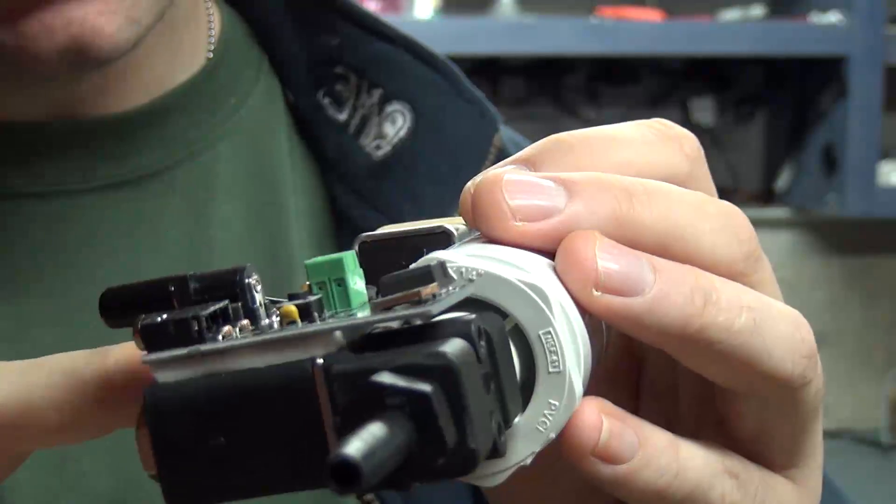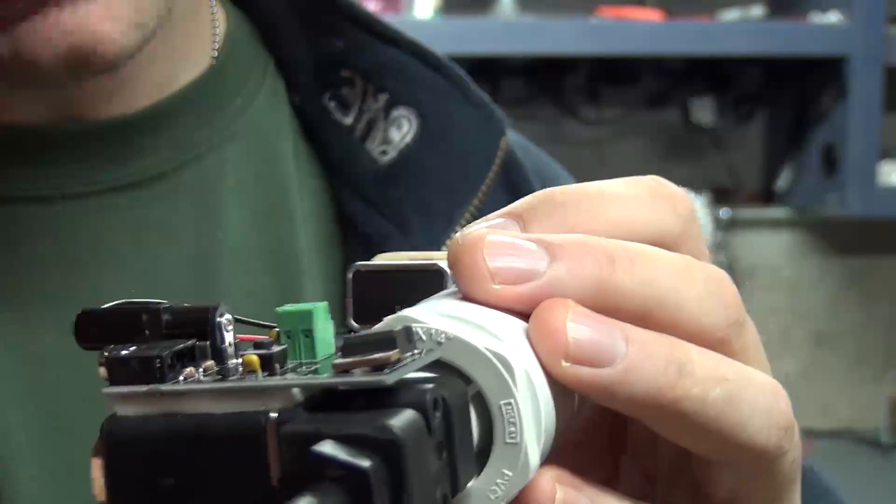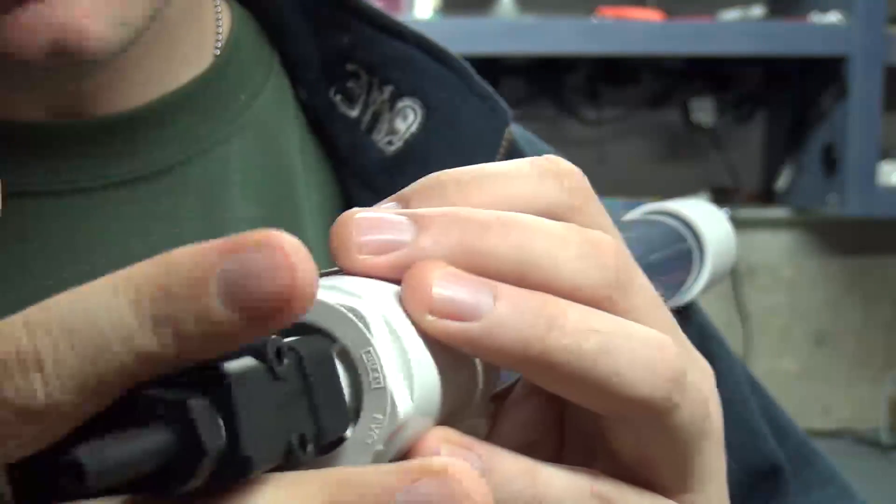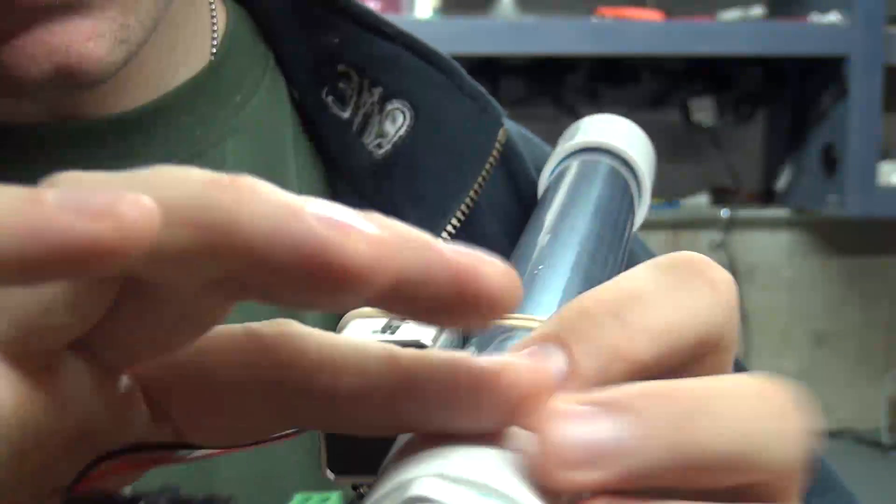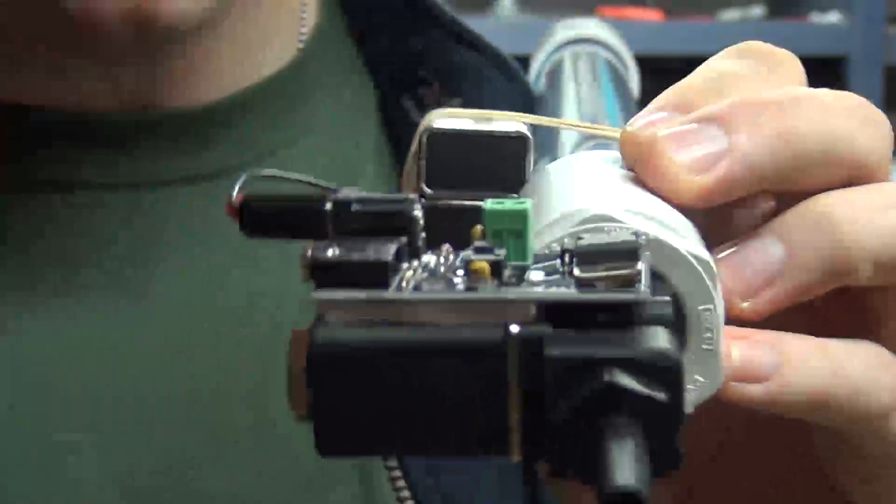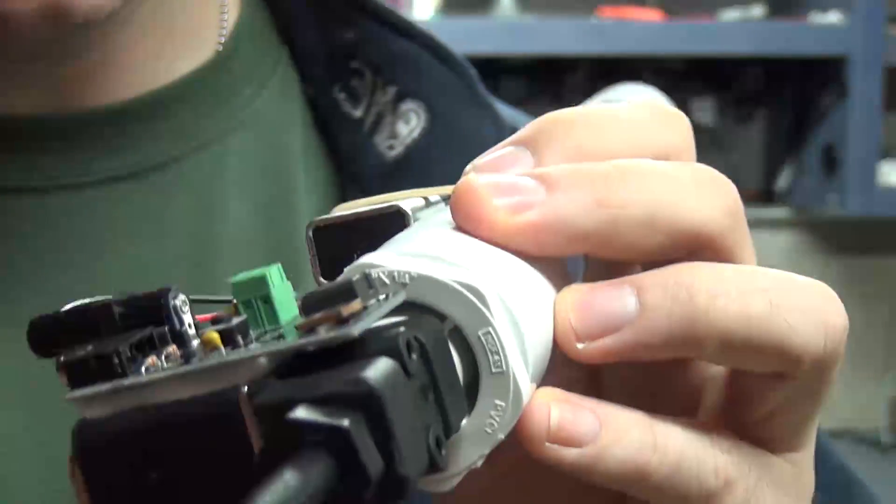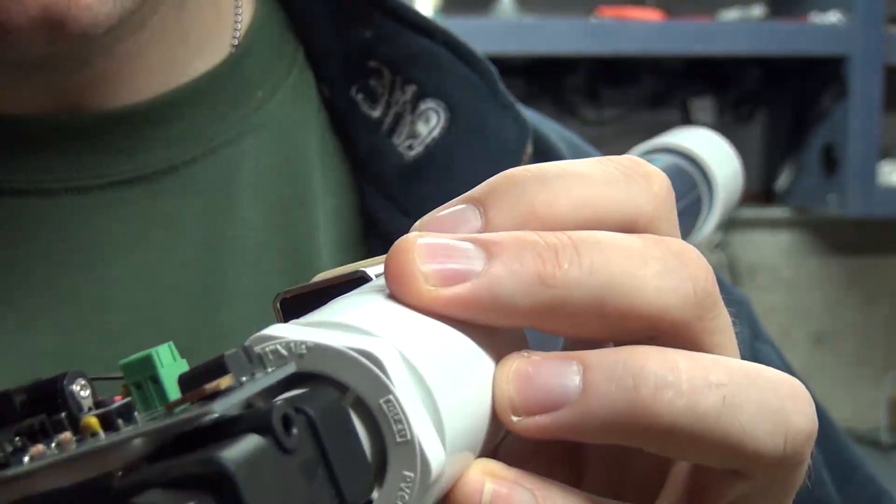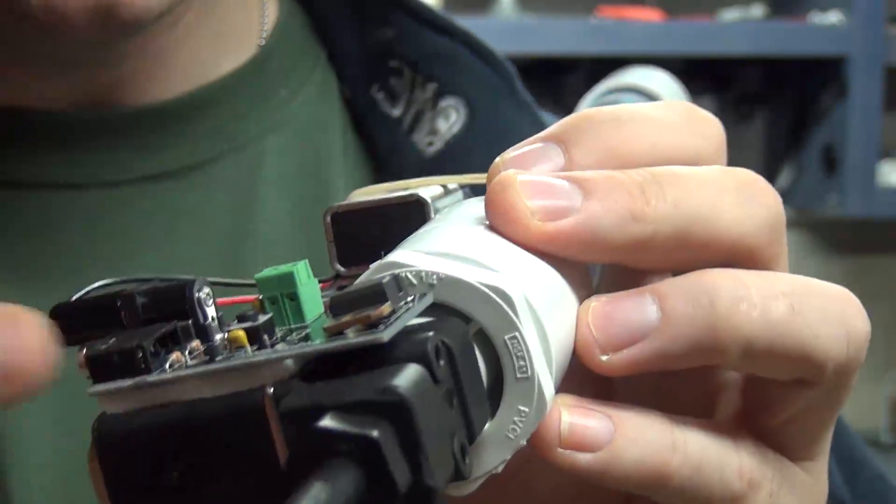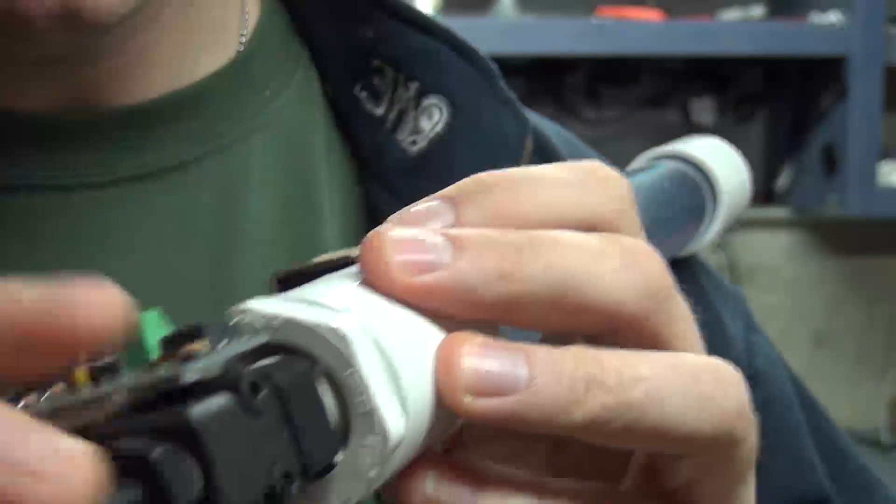If anybody has any really clever ideas on how to sort of shield that in a way that looks pretty nice, let me know. I mean a lot of people have kind of put plastic bags over this with rubber bands and that works great. Maybe I should add that to the feature but it doesn't look very elegant. So if anybody has a clever idea on how to improve this and make it more water resistant, let me know.